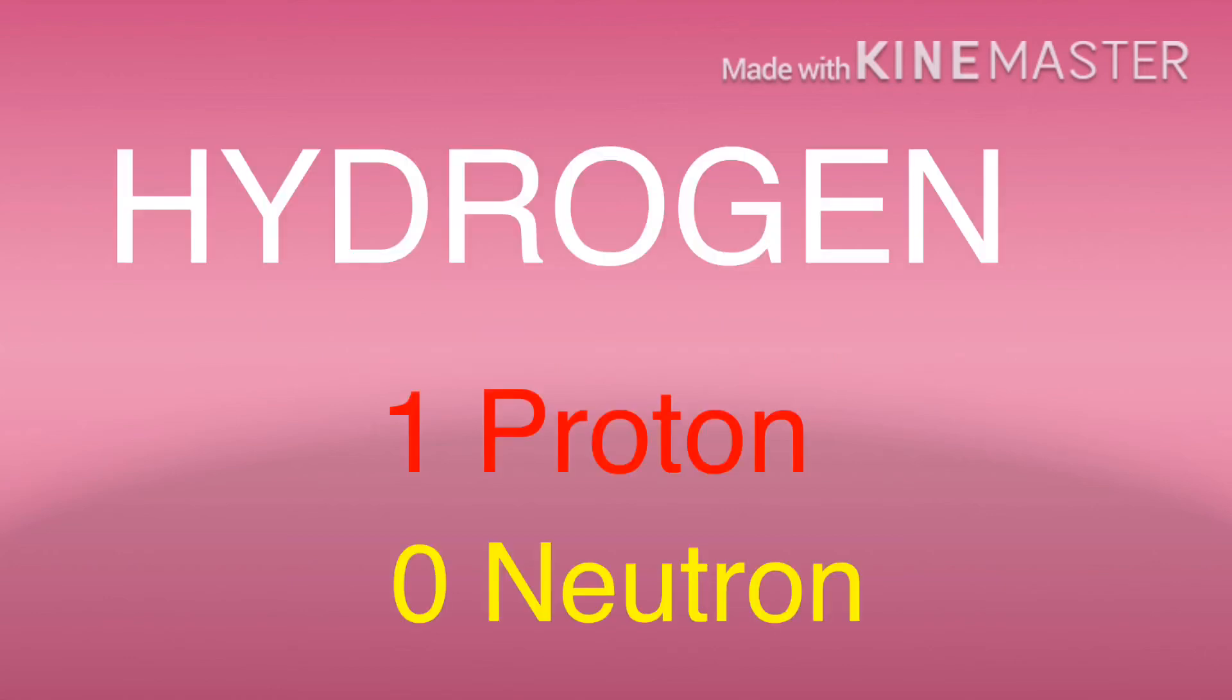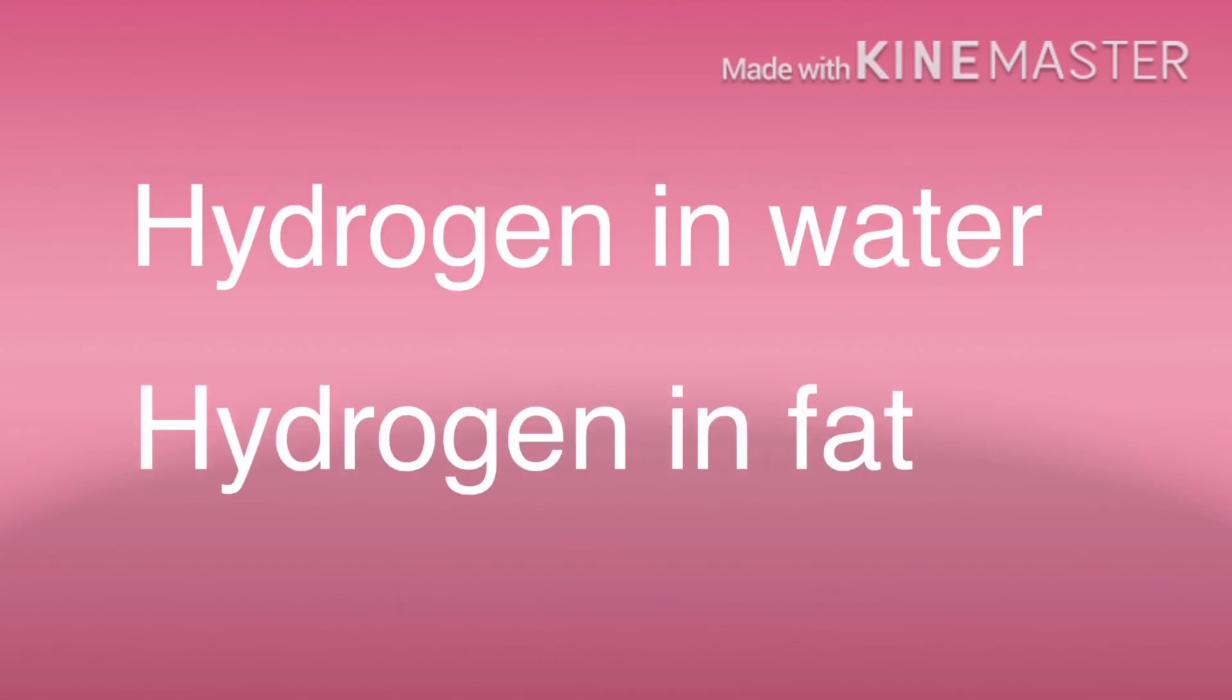The best example of MR active nucleus is hydrogen. Hydrogen has only one proton and no neutron. Hydrogen will give a relatively large magnetic momentum. This enables the utilization of maximum amount of available magnetization in the body. First, there are water molecules. We have hydrogen in water and hydrogen in fat.